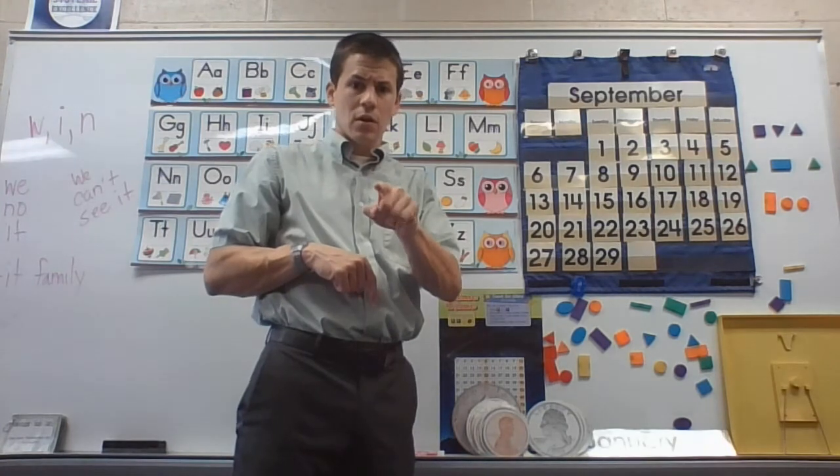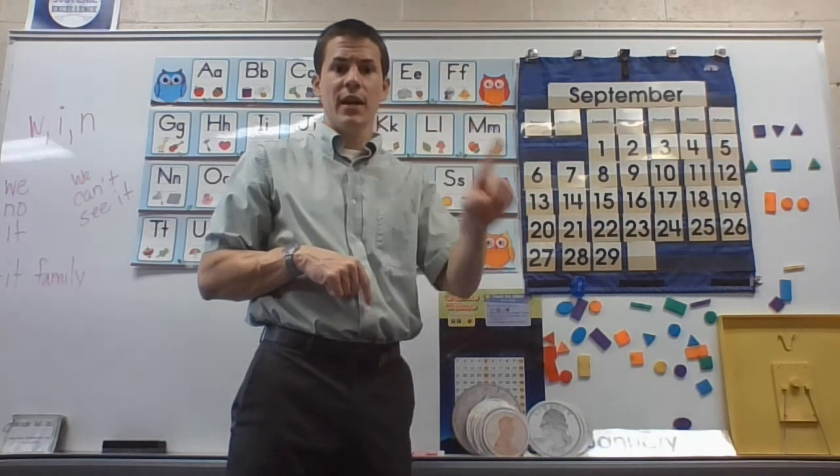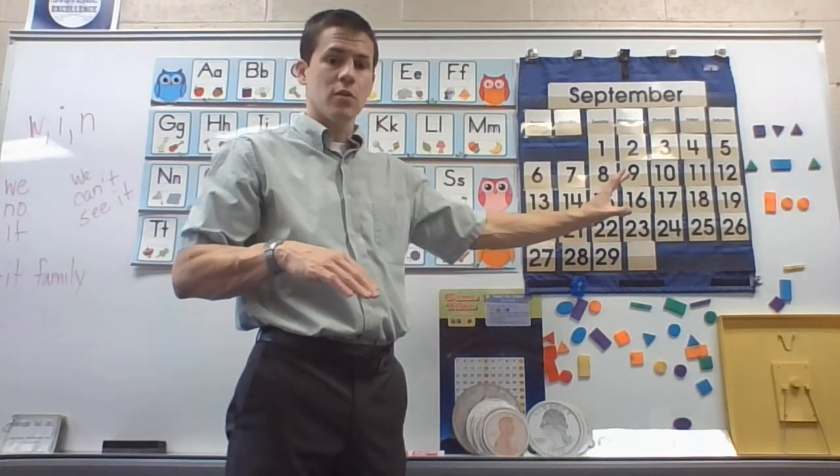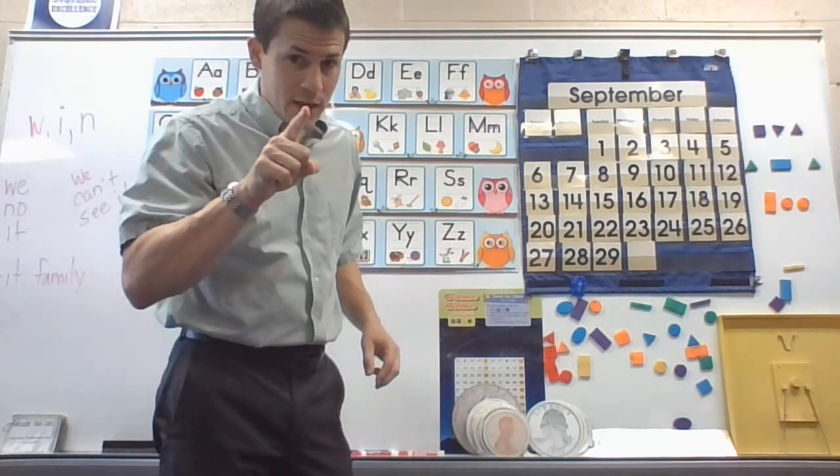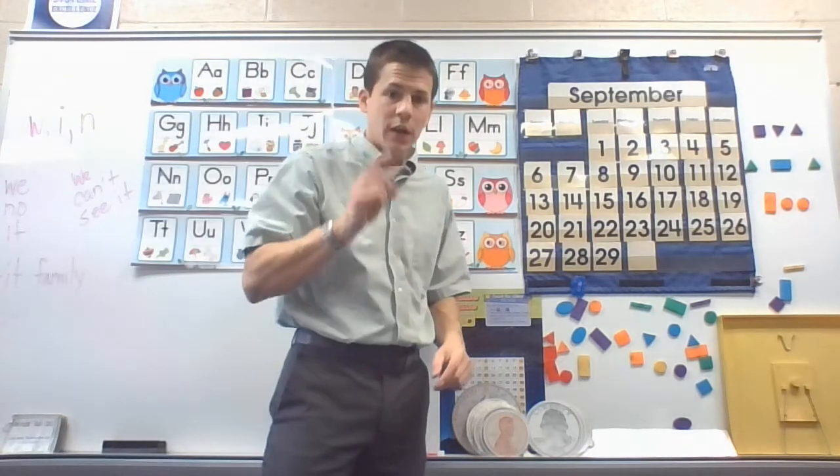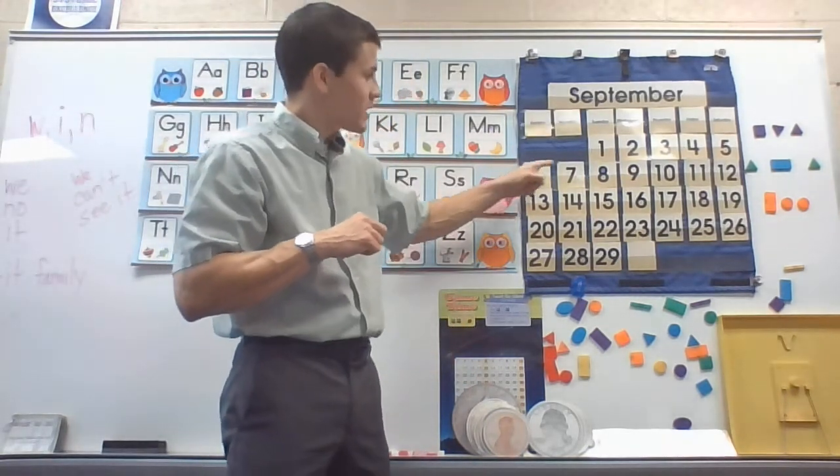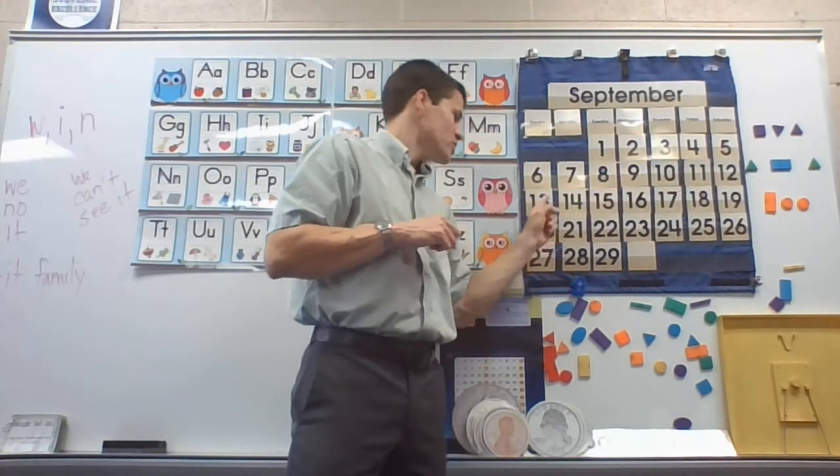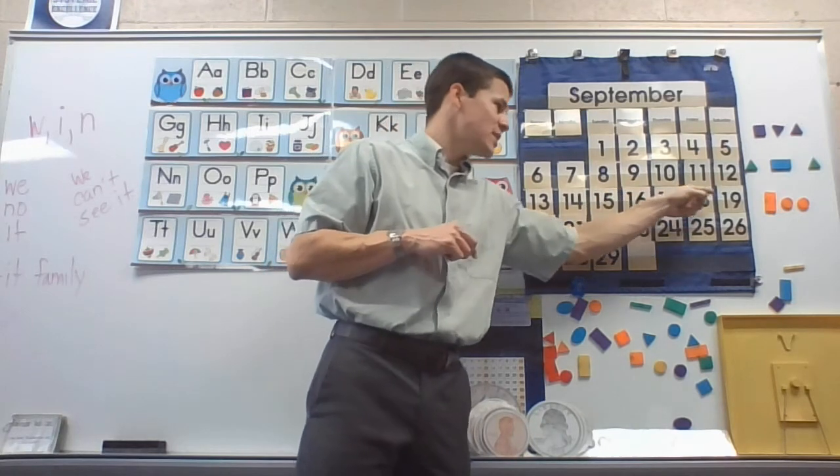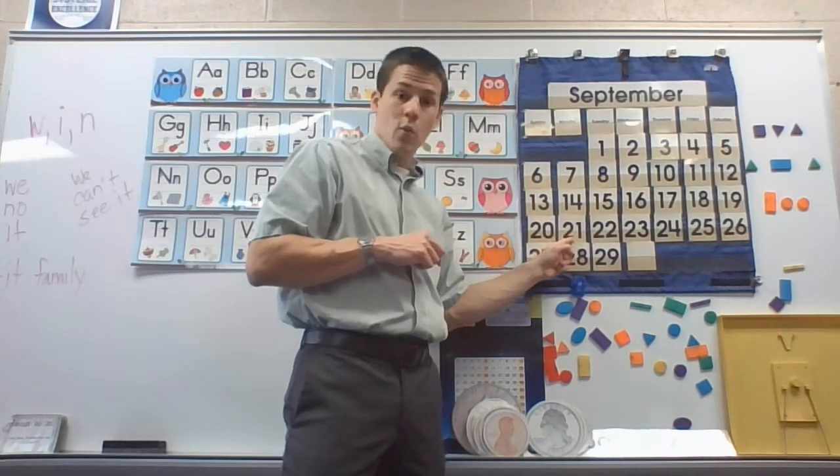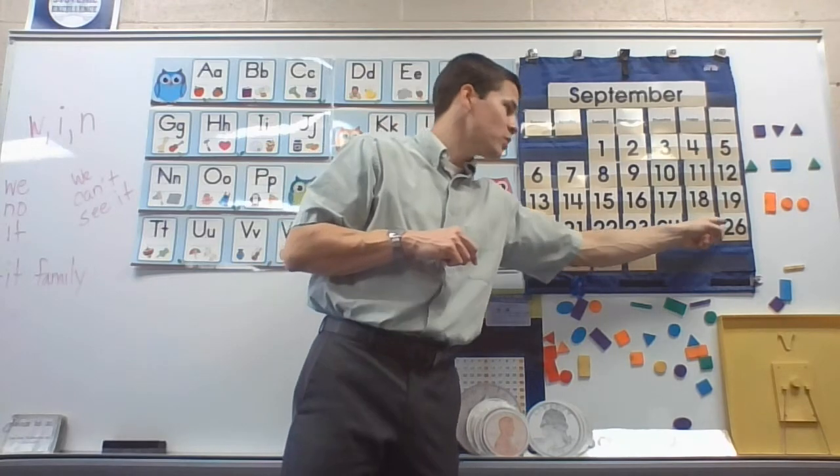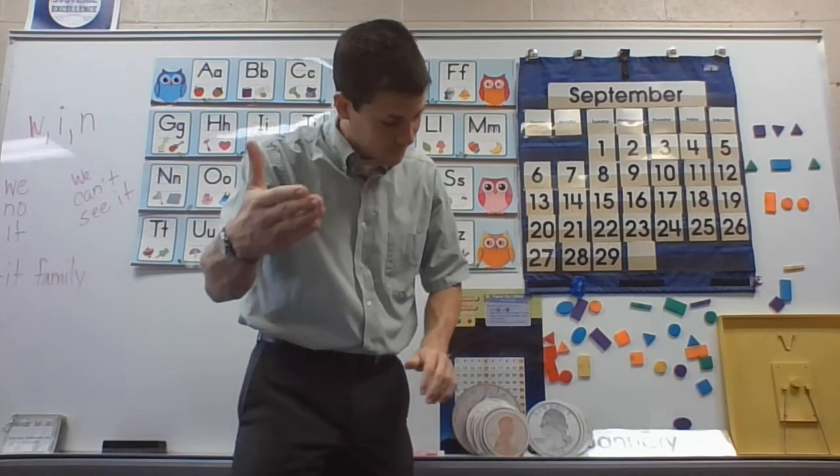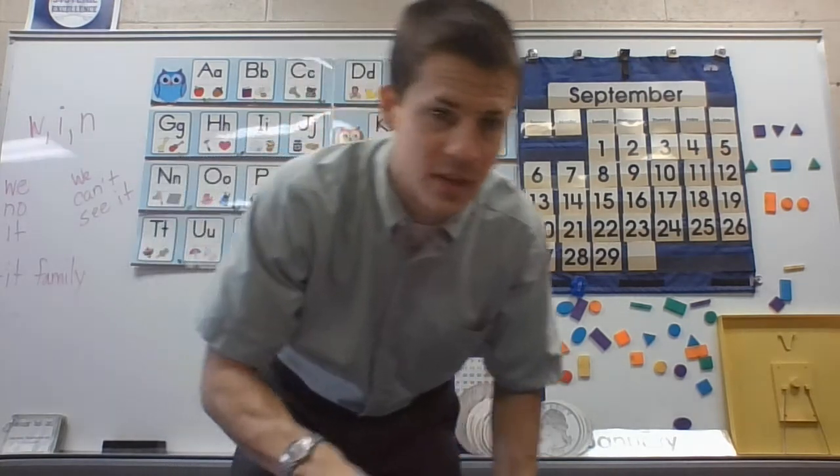Let's count. Not to 20. We're going to count as high as we can on our September calendar. You can look at these numbers, or you can use your brain. Ready? 1, 2, 3, 4, 5, 6, 7, 8, 9, 10, 11, 12, 13, 14, 15, 16, 17, 18, 19, 20, 21, 22, 23, 24, 25, 26, 27, 28, 29. I think you're going to know what comes next, I think.